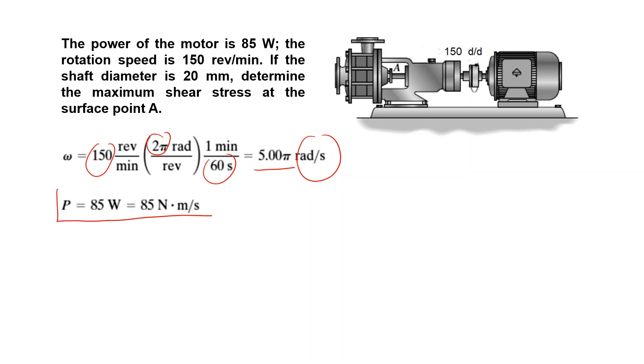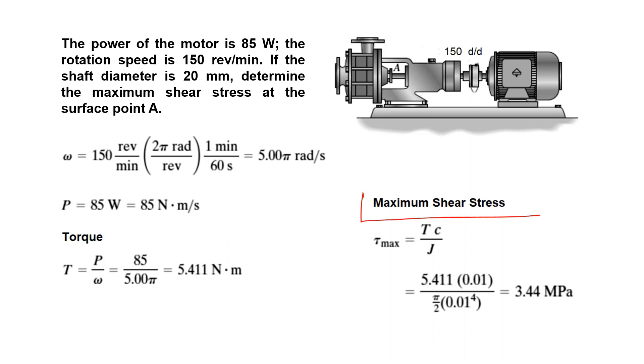Next, calculate the torque. I know the power and the angular speed: 85 divided by 5 pi gives you the torque as 5.411 Newton meters. Next, maximum shear stress: again very simple, torque times radius divided by the polar moment of inertia. The maximum shear stress on the surface is 344.